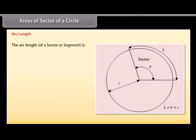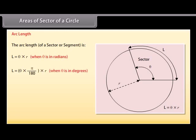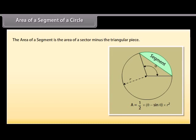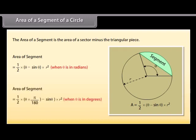Arc length: By the same reasoning, the arc length L of a sector equals θr when θ is in radians, or L equals θ × (π/180) × r when θ is in degrees. The area of a segment is the area of the sector minus the triangular piece. Area of segment equals ½(θ − sinθ)r² when θ is in radians, or ½ × (θ × π/180 − sinθ) × r² when θ is in degrees.